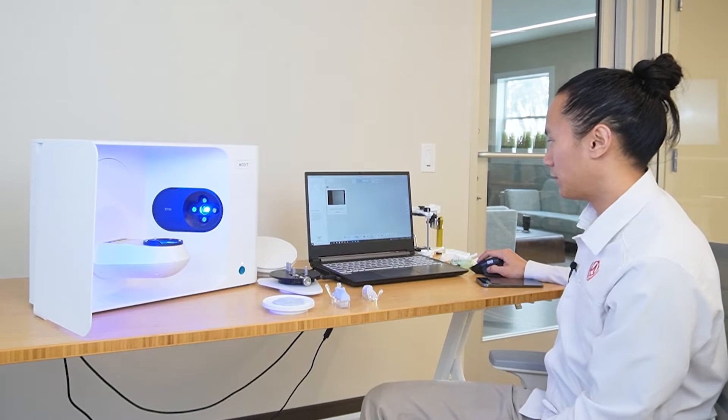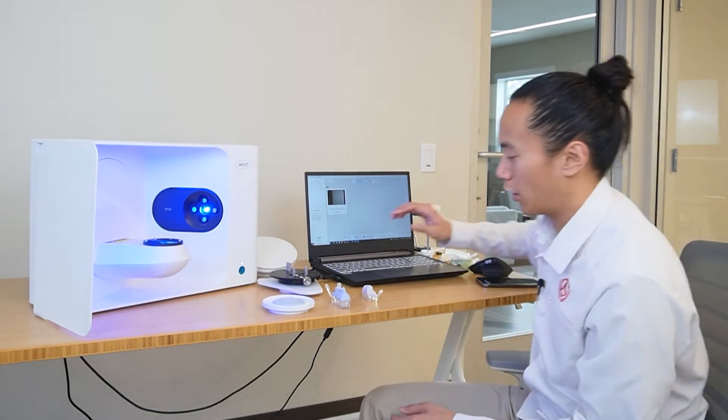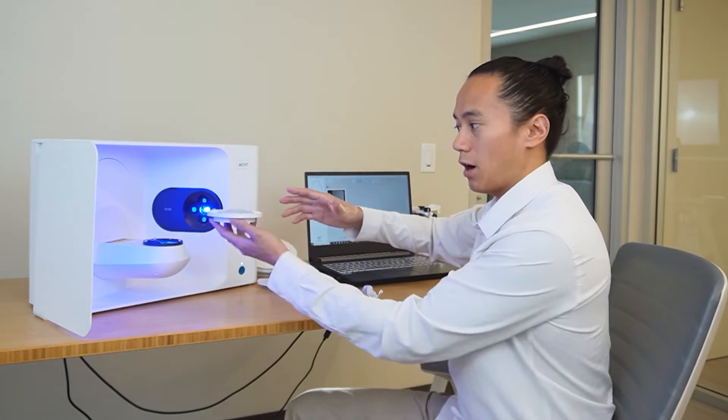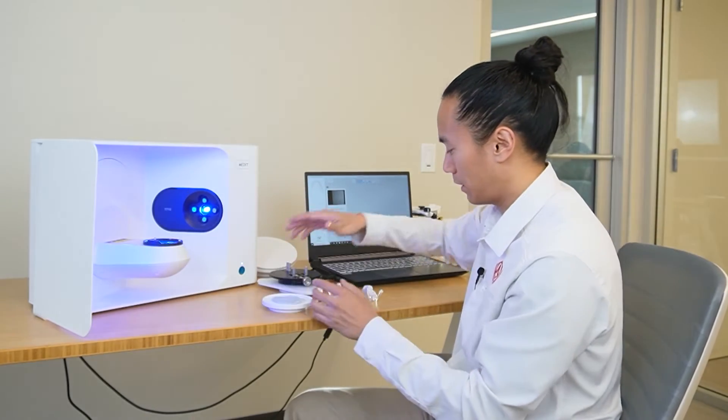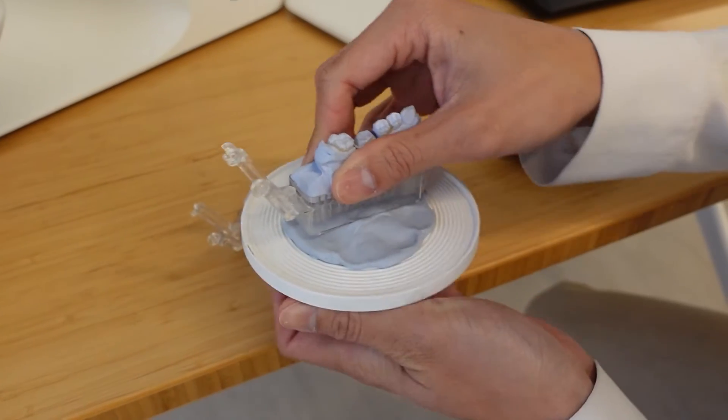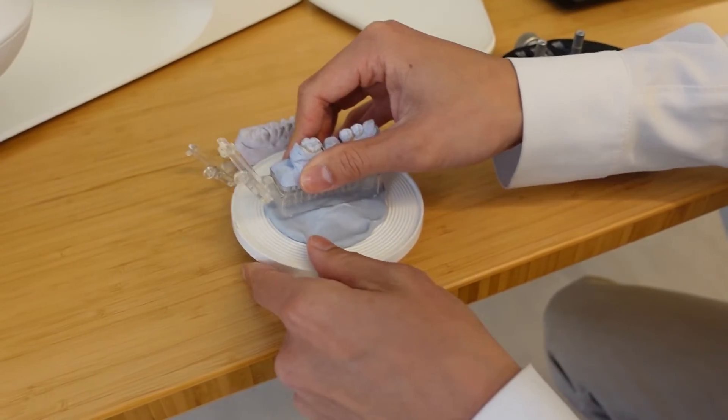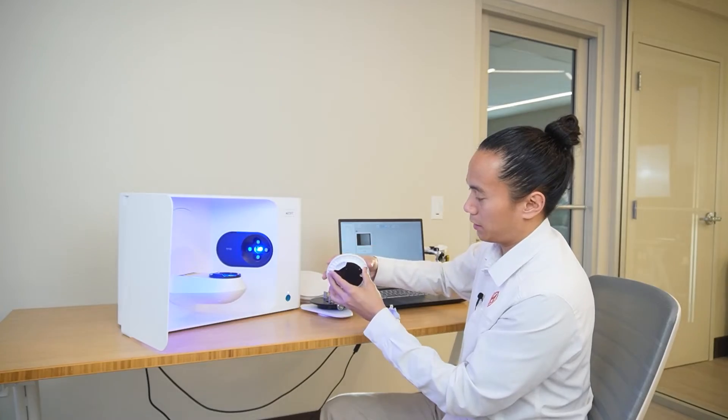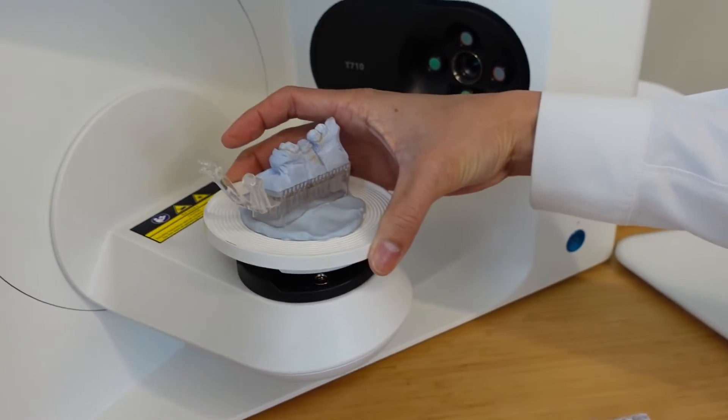The first step here is to scan our opposing. And again, I have my plate off of my scanning arm. I'm going to then just take my opposing model and we're just going to fix it onto our plate. Double check that it's stable. And from there, place it onto the scan stage.